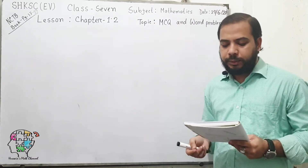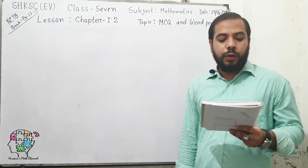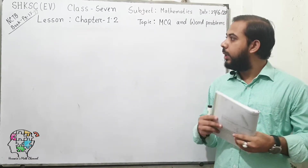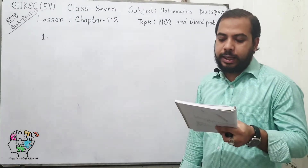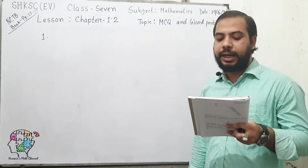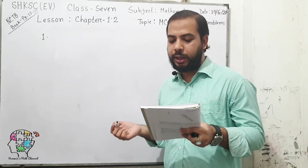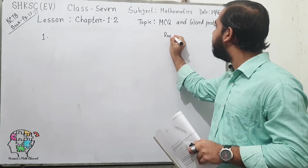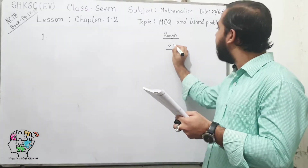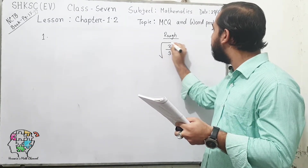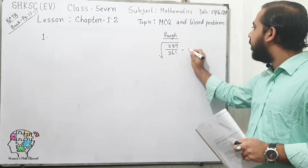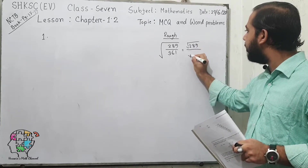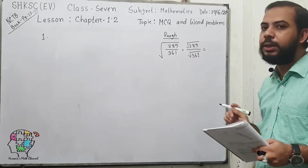MCQ question number one from exercise 1.2: which one of the following is the square root of 289 divided by 361? We need to find the square root of 289 and 361 separately. If we find the square root of 289 and square root of 361 separately, then we can easily find the answer.